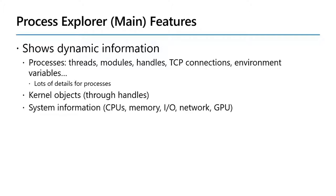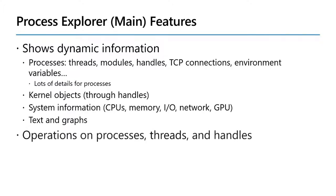It has some global information about the system such as CPU usage, memory, I/O, networking and so on. Some of the information is textual — in fact most of it is — but there are some graphs that allow you to see things as they change through time, such as CPU utilization and memory utilization on a system-wide or per-process basis.